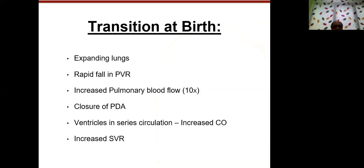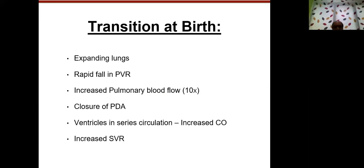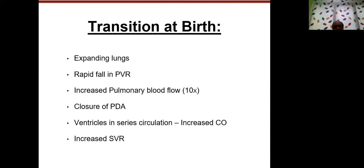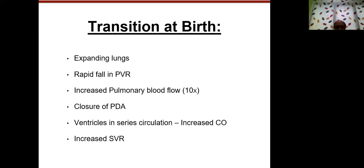Only 16% of the total cardiac output goes to the lungs in the fetus — this is a parallel circulation. After birth, there is tremendous expansion of the lung as the baby starts breathing, a rapid drop in pulmonary vascular resistance, then increased pulmonary blood flow by a factor of 10, spontaneous closure of the PDA, and the circulation becomes more of a series circulation than parallel, with an increase in systemic vascular resistance.